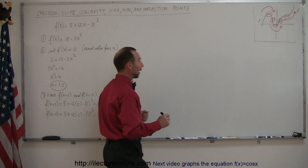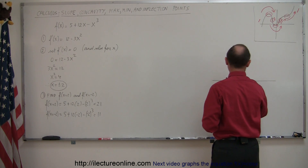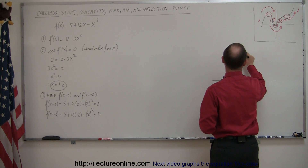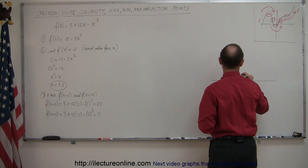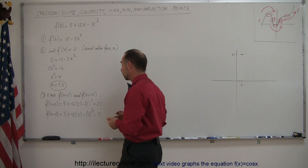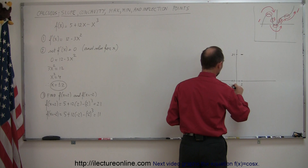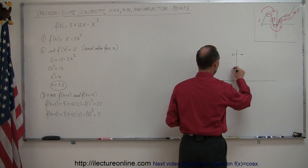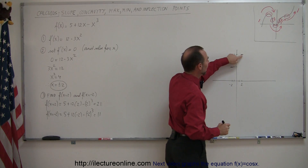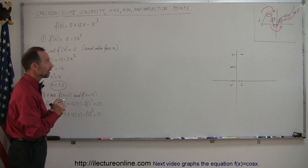Let's go ahead and put those points on the graph. When x = 2, y = 21, so up here somewhere — at this location we have a horizontal point. We don't know yet if it's a max, a min, or an inflection point. Then when x = -2, y = 11 — over here we have another point where the slope is 0. So either these are max, min, or horizontal inflection points, but we don't know for sure yet.